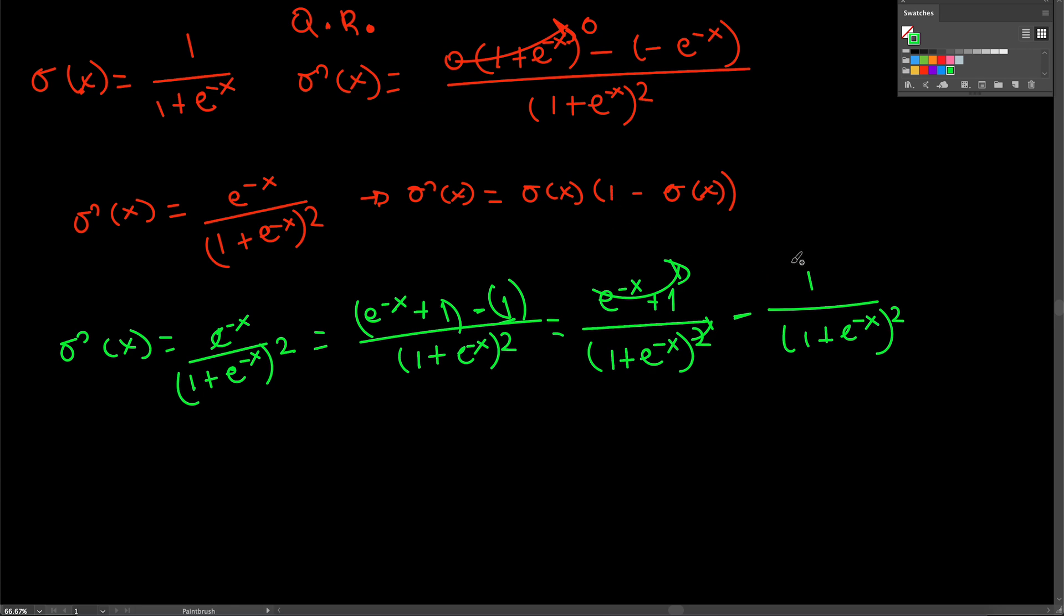And then this can be expressed as sigmoid squared because of course we can just say well this is 1 squared and of course 1 squared is just 1. And then we can say well this is sigmoid squared and this ends up being 1 over 1 plus e to the minus x which is of course sigmoid. So when we rewrite this.